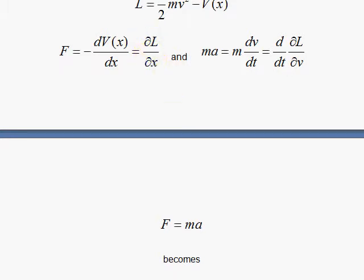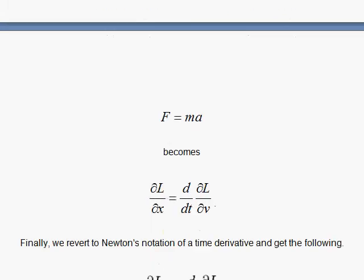So the partial of L with respect to x equals d dt of the partial of L with respect to v. The partial of L with respect to x equals d dt, the partial of L with respect to v. And this is the force, and this is the mass times acceleration. That's neat.